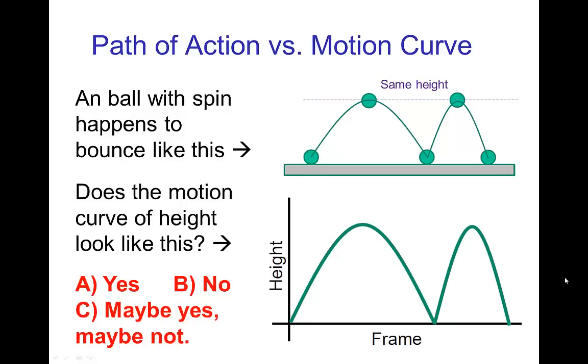So, consider the following question. Suppose that we have a ball that due to the spin happens to bounce like this. So it goes up, then down, then because the ball has some spin, it happens to come up to the same height, and then come down, just not go as far. So,